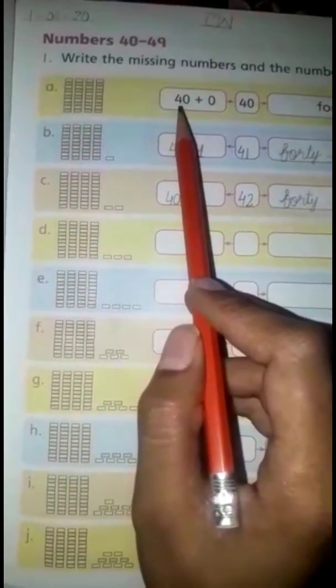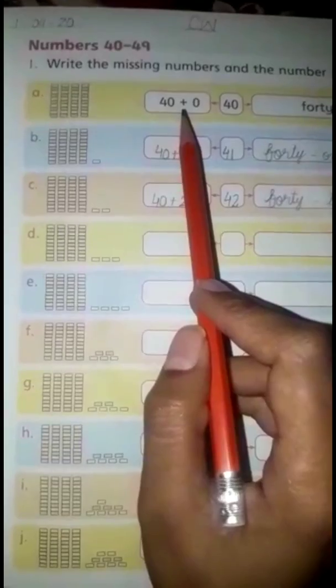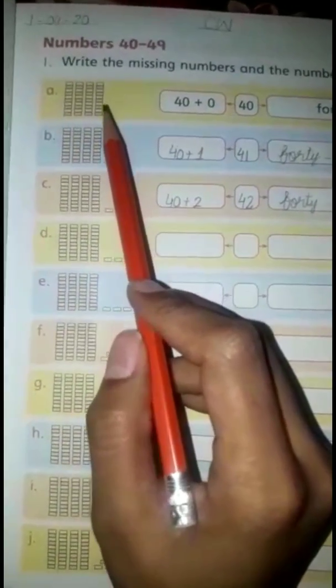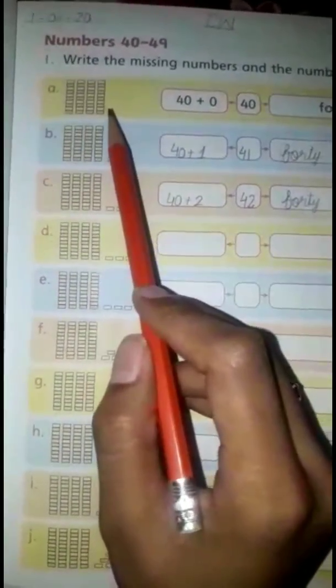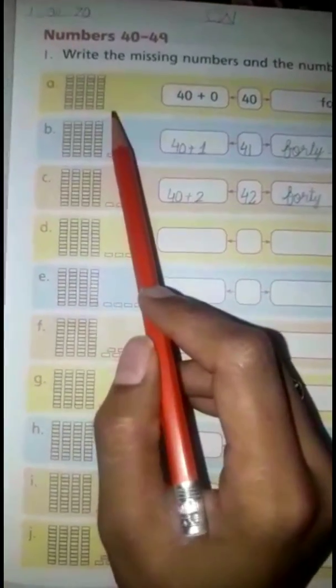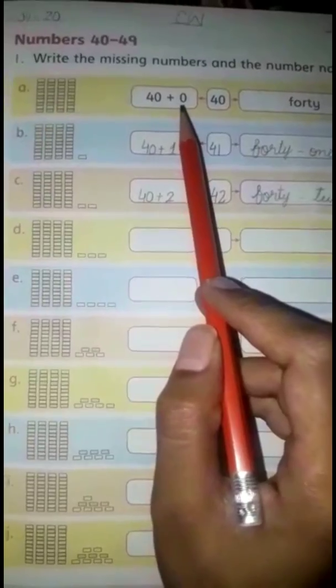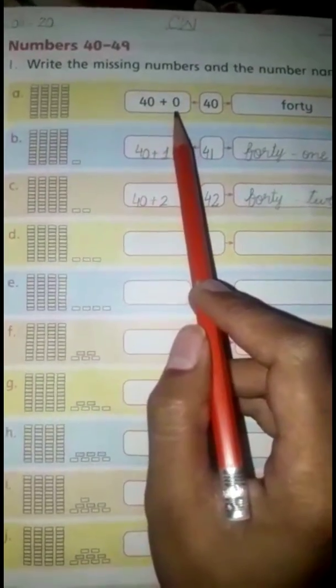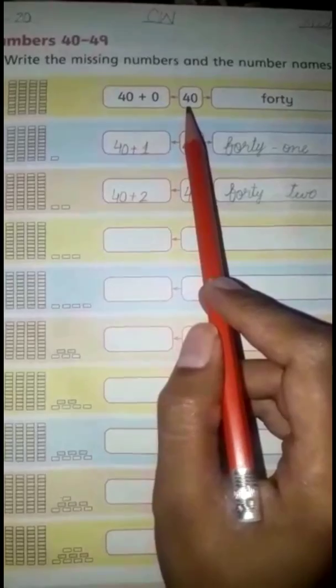We have to write 40, then a plus sign. You have to remember that if there is no stack or there is no box, where there is nothing, we have to put zero.